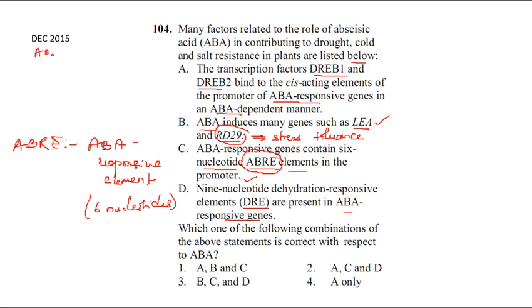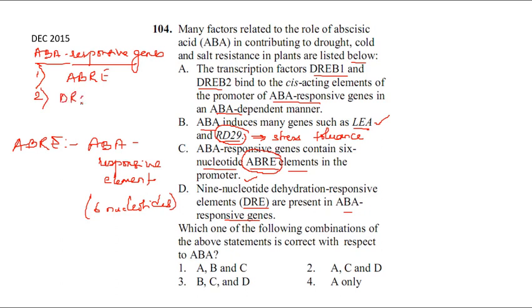ABA-responsive genes also contain nine-nucleotide dehydration responsive elements (DRE). ABA-responsive genes contain both ABRE (six nucleotides) and DRE (nine nucleotides). DREB1 and DREB2 are transcription factors activated in response to ABA. All statements A, B, C, D are correct.